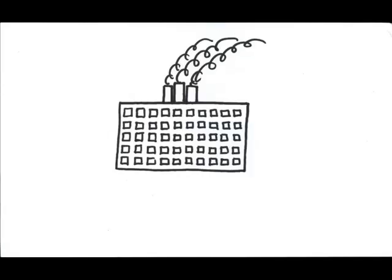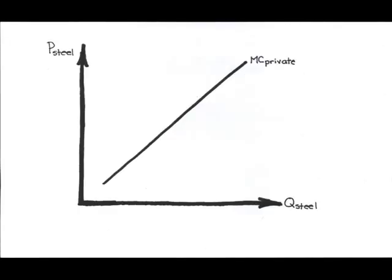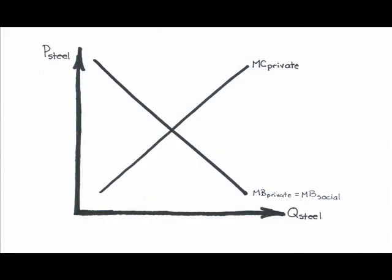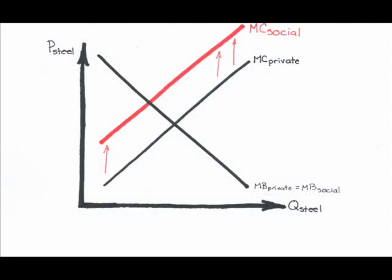The same idea would apply to, say, a steel factory. There's a certain private cost of producing steel—I'll assume that on the benefit or demand side, private and social are the same for now. But the production of steel also results in pollution, a cost to others in society. This means that the marginal social cost is greater than the marginal private cost.